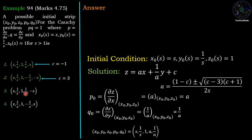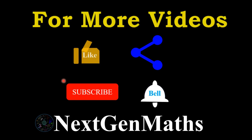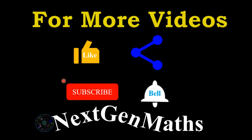So the first two options are correct. The third and fourth options are never correct because we cannot find any value of c that produces them — in those options a and 1/a have opposite signs, which is impossible. Therefore this problem has two correct answers: options 1 and 2. Thanks for watching — like, share, subscribe, and hit the bell icon.